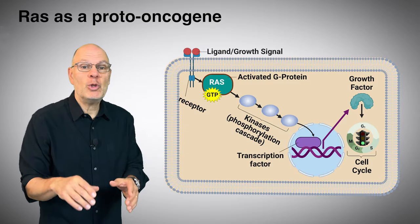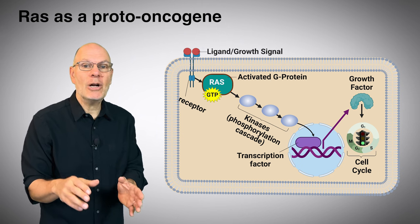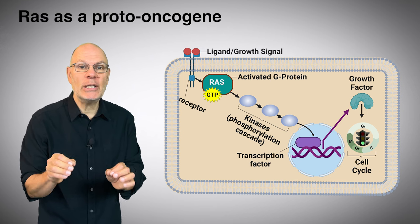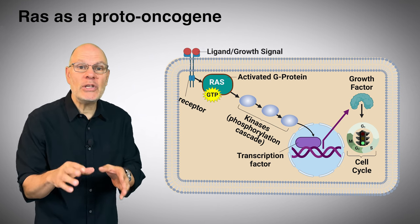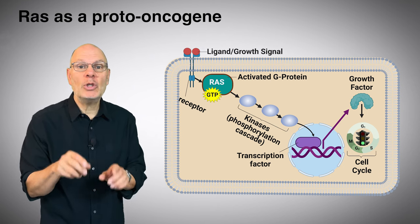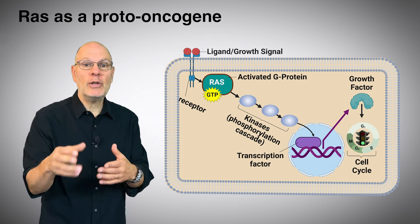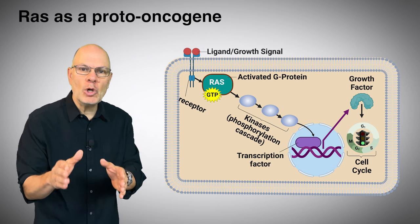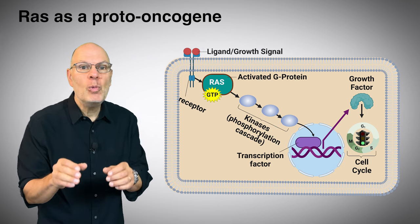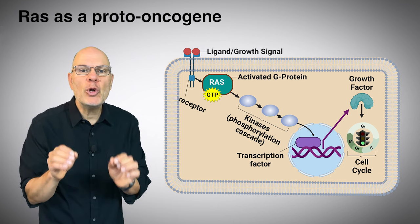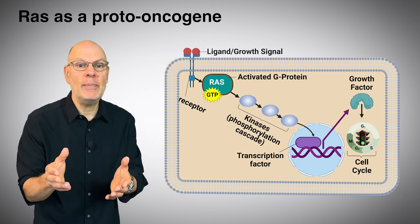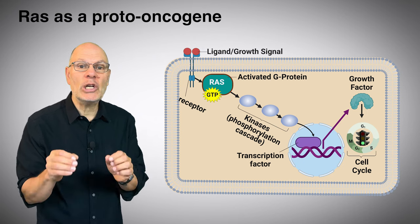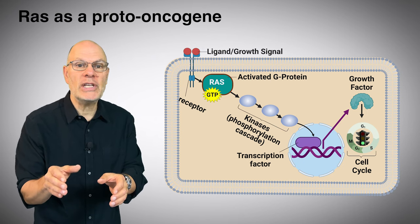Now we understand the difference between tumor suppressor genes and oncogenes, so let's look at these genes in the context of cell signaling systems. If you need to review cell signaling, follow the link below to learn-biology.com. We're going to start with a proto-oncogene called RAS, which is implicated in about a third of all cancers in human beings.